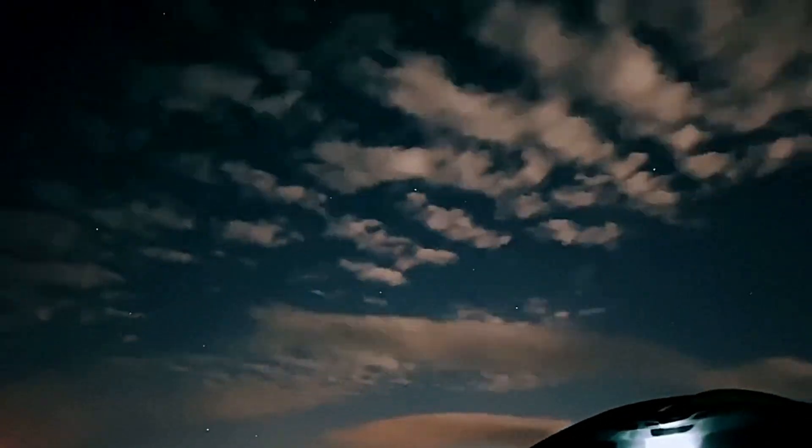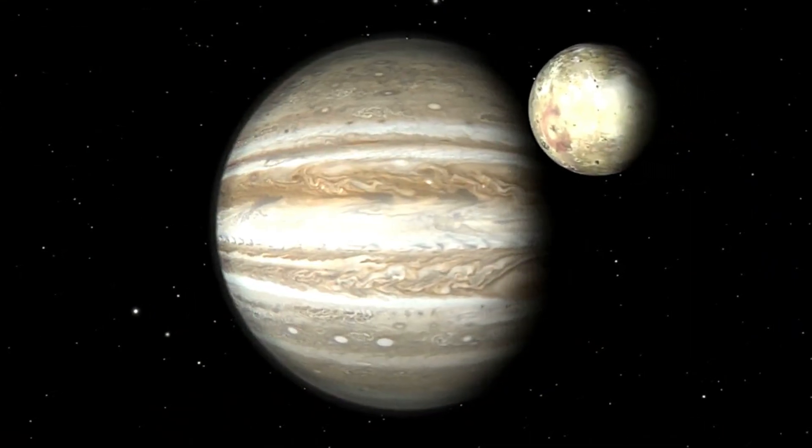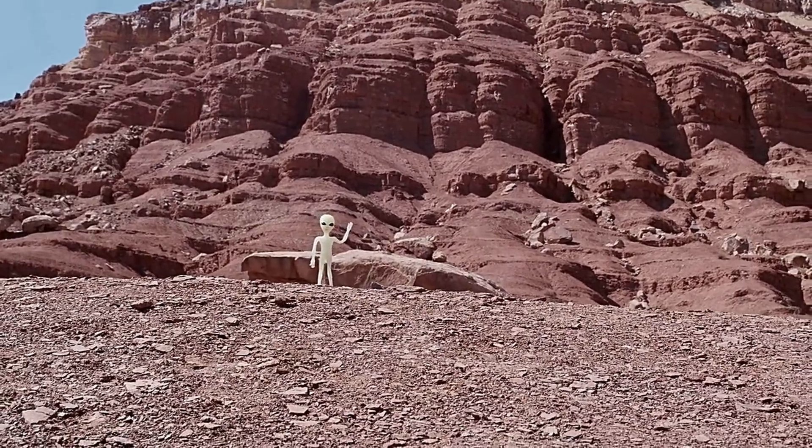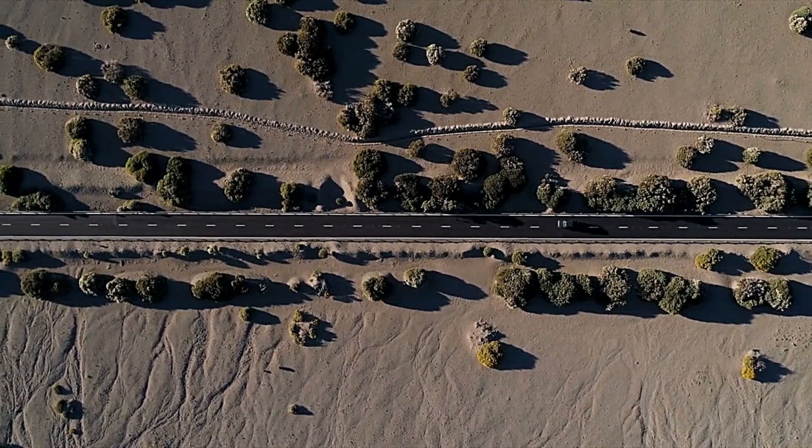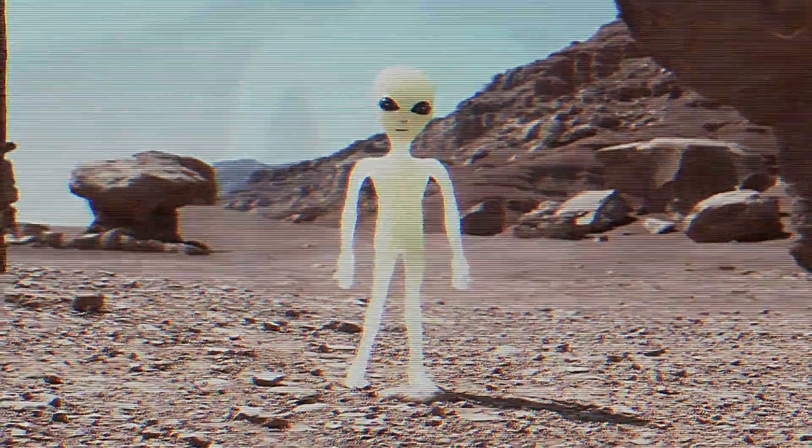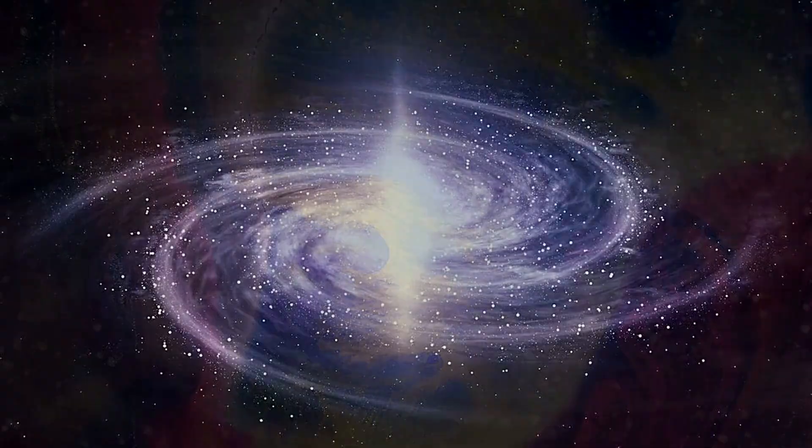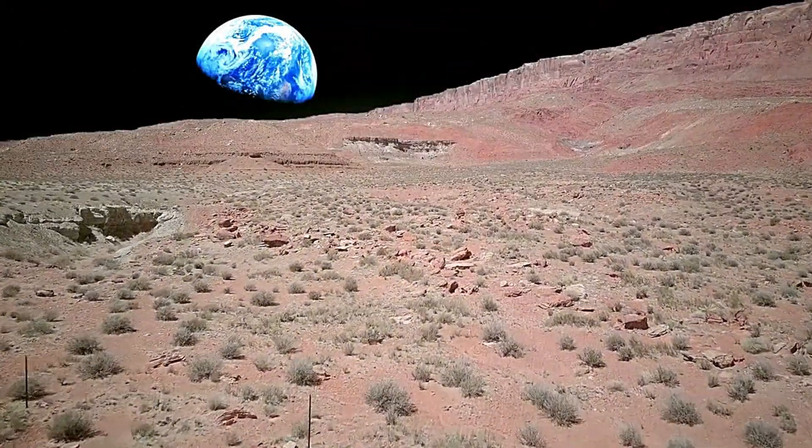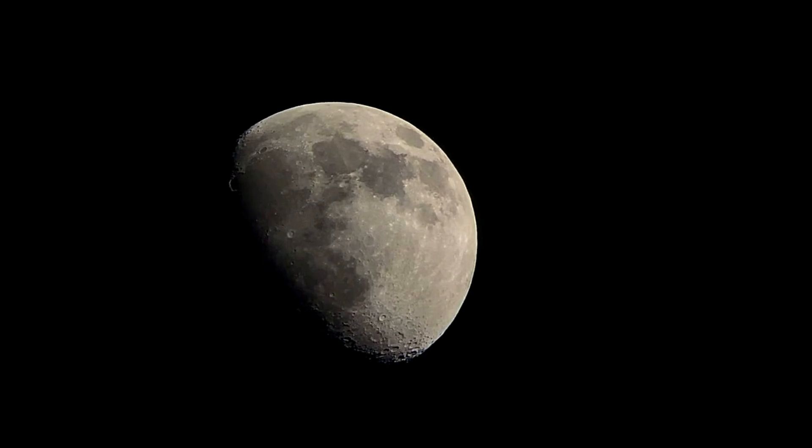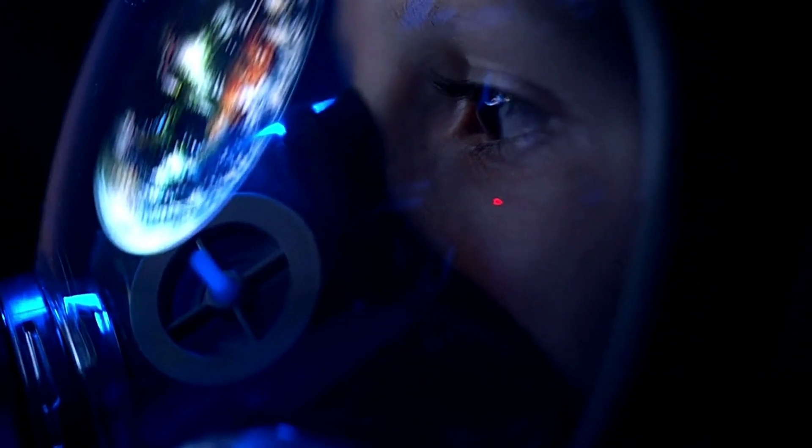There are a few possible explanations for the Fermi Paradox. Maybe we haven't found aliens because they're all too far away, or because they're all dead, or maybe it's because we're not looking in the right places. But one thing is for sure: the universe is big and there's a lot of room for other life forms to exist. So where do we go from here? How can we find these other life forms?